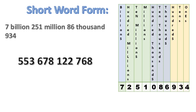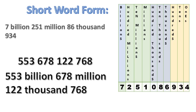Let's do another example: 553,678,122,768. Here is how to write that number in short word form. Notice I wrote my digits in the billions period, which is 553, as a number. Then I wrote my period in words: billion. So the short word form for that number is 553 billion, 678 million, 122 thousand, 768.